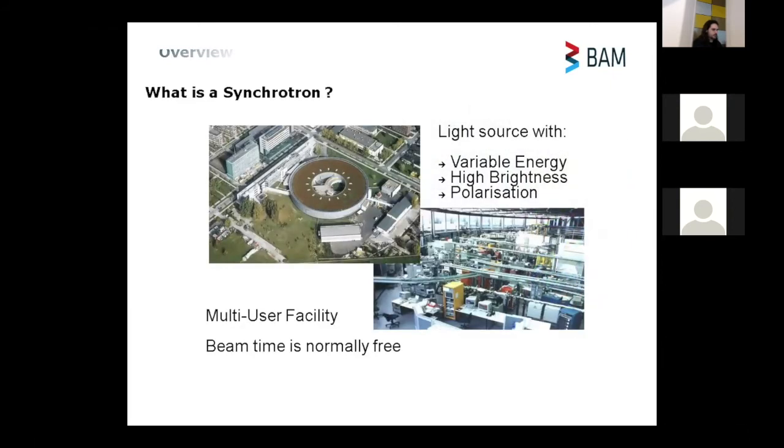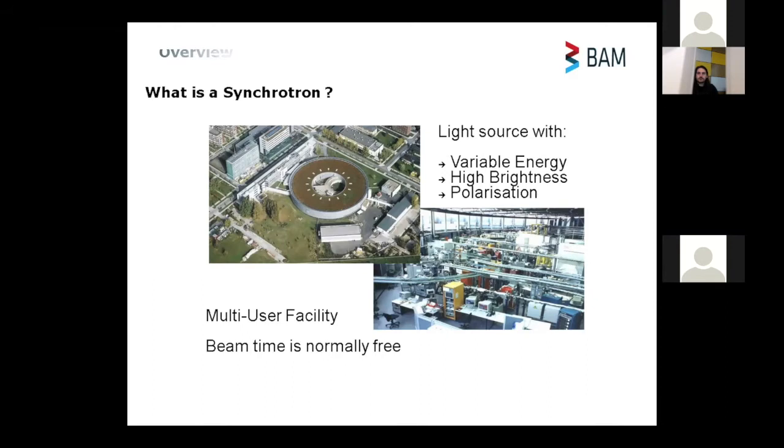From the practical point of view, the synchrotron is just a light source in big traces normally. You have a broad energy spectrum, so variable energy you can choose. It has very high brightness, meaning you have a lot of photons so you can focus on a small spot or measure very fast. And the X-rays are polarized, which means you have minimum scattering in one direction. You can put your detector where you don't have scattering, which is nice for X-ray fluorescence.